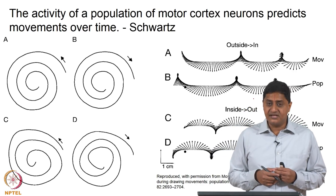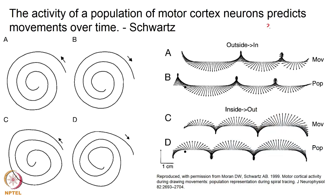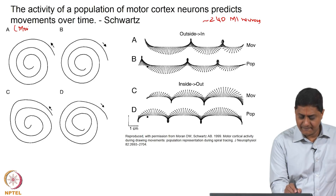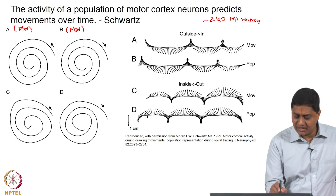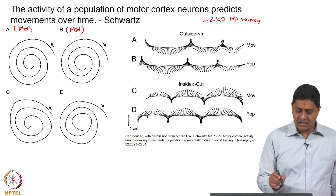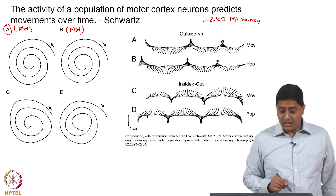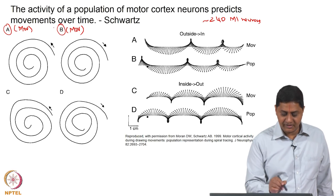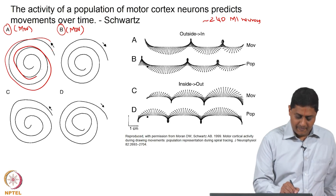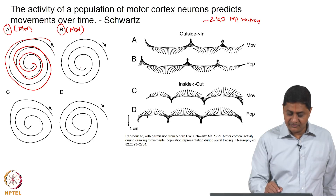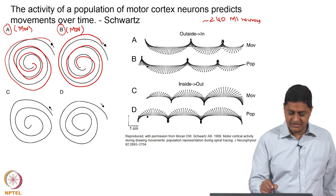Andy Schwartz and his colleagues studied the activity of about 240 M1 neurons in the primary motor cortex of live behaving monkeys. The movement trajectories required were spirals. This spiral movement can be made from the outside to the inside, as in A, or from the inside to the outside, as in B.